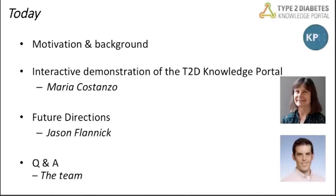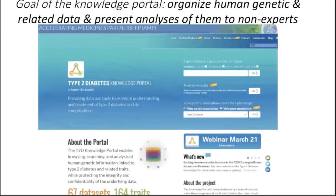What is the Knowledge Portal? Very simply put, the goal of the Knowledge Portal is to be a software platform and resource expressed in a user interface that organizes and aggregates human genetics data and related data and presents them to non-experts. So the goal of it is really to make accessible human genetics data.